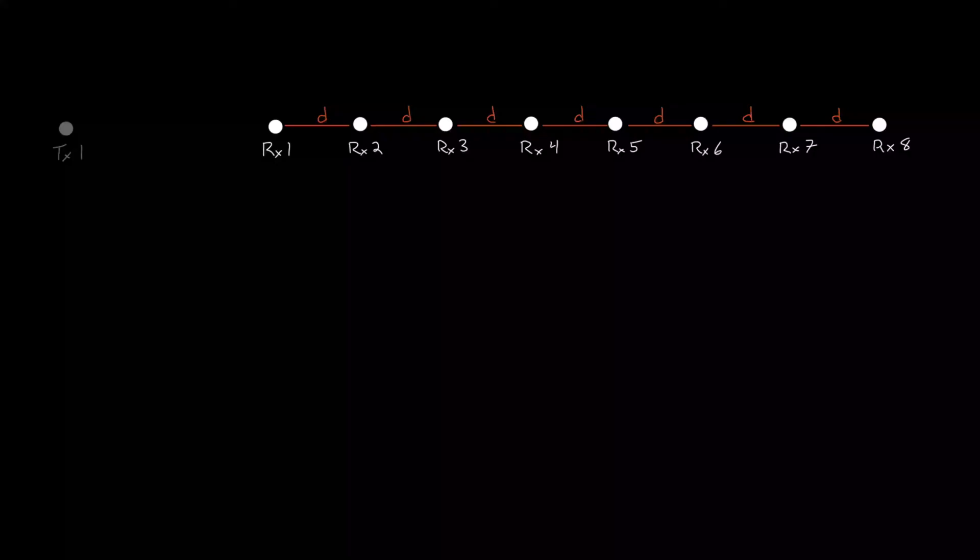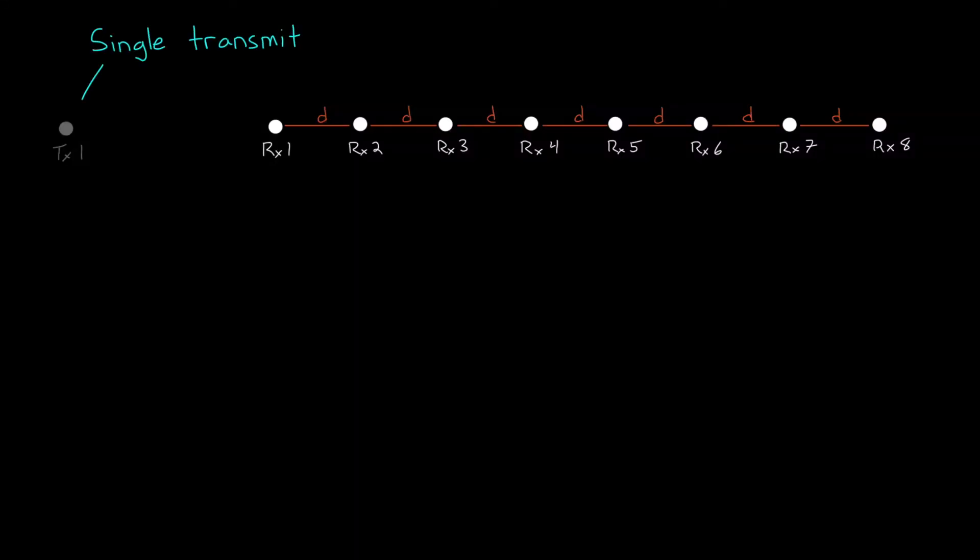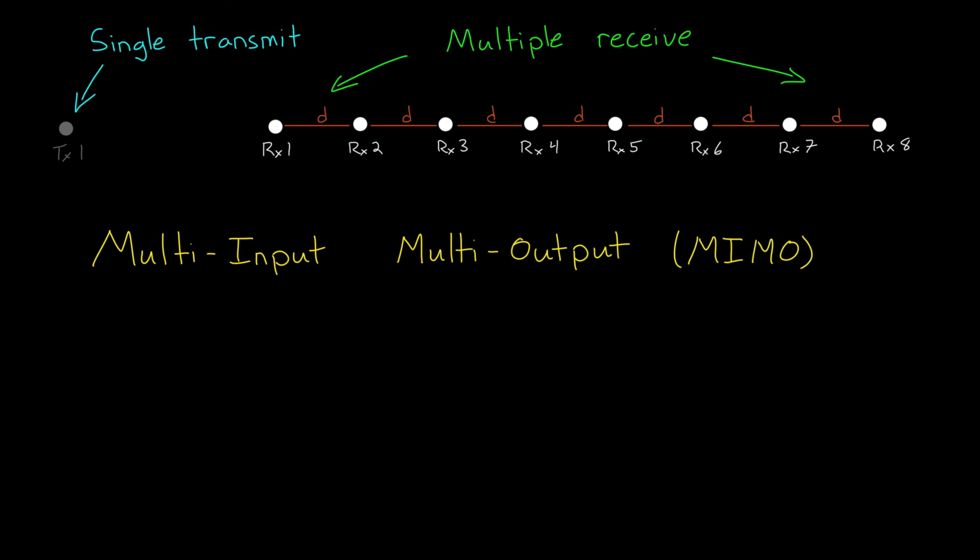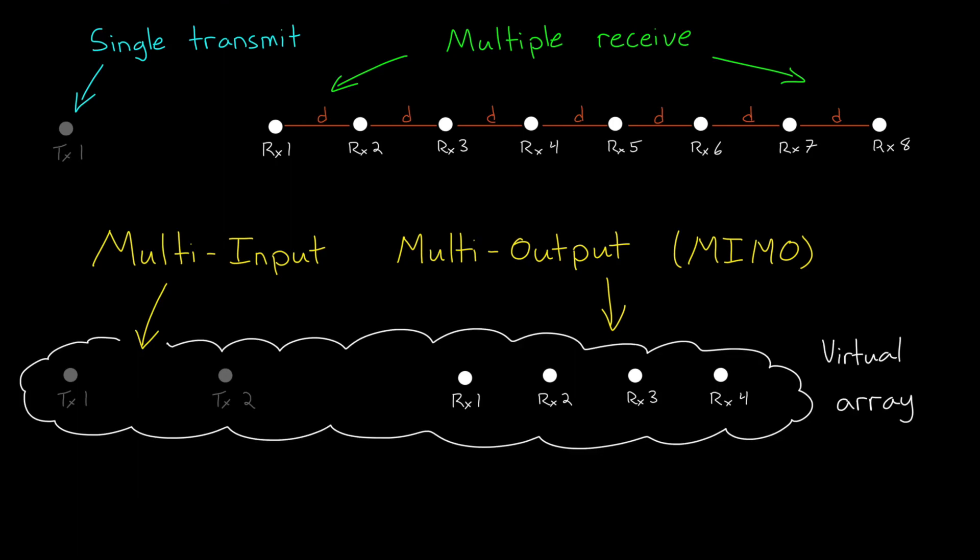What we've talked about so far is a radar system with a single transmit antenna and multiple receive antennas. But there's a concept called MIMO radar, or multi-input, multi-output. With MIMO, we can have a system with multiple transmit antennas and multiple receive antennas. Hence the name. And there's a very clear benefit to moving to a MIMO radar. And that's because you can form a virtual array.